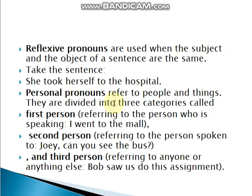Then there are personal pronouns, which refer to people and things. They are divided into three categories: first person, second person, and third person. Personal pronouns ek person ko refer karne ke liye use hote hain. First person referring to the person who is speaking — jo khud bol raha hota hai. For example: 'I went to the mall' — 'I' is first person. Second person refers to the person spoken to. Example: 'Joy, can you see this bus?' Third person refers to anyone or anything else. Example: 'Bob saw us do this assignment.'